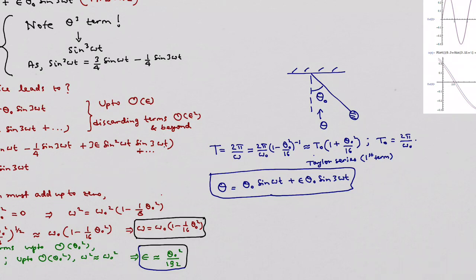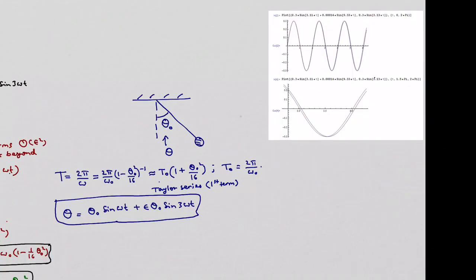With these expressions if we try to plot the expression for the resulting solution we get the following. In red and blue we plot the expression for the solution which we have obtained, which is θ = θ₀ sin ωt + ε θ₀ sin 3ωt.